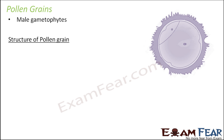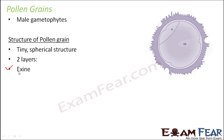Now let us look at the structure of the pollen grain. It is a tiny spherical structure. It has two layers. The outer layer is called exine — since it is externally located, it is called exine. The inner layer, since it is internal, is called intine. So exine and intine are the two layers.